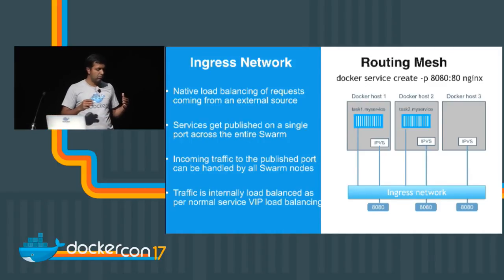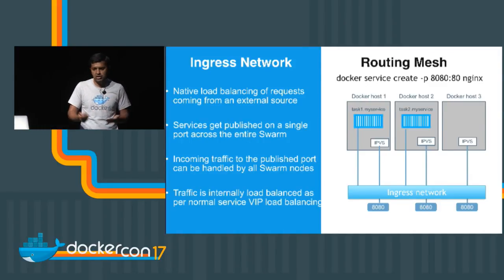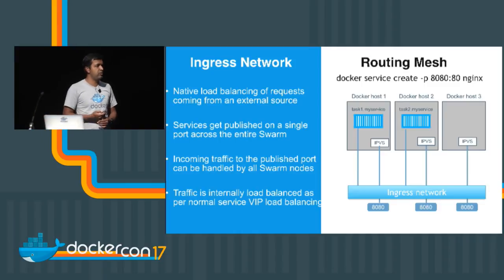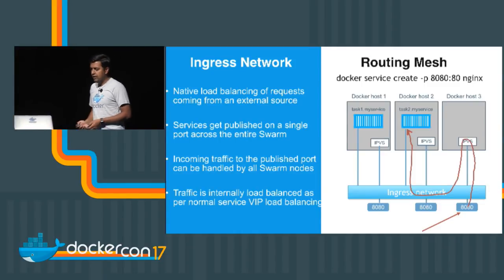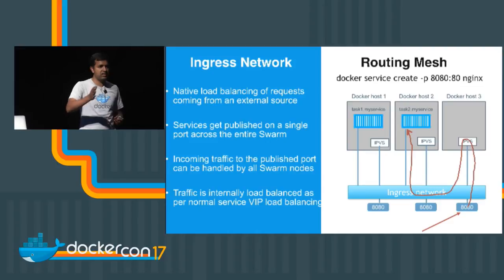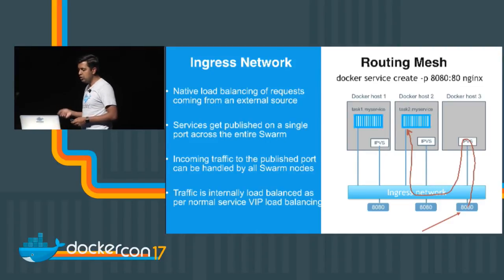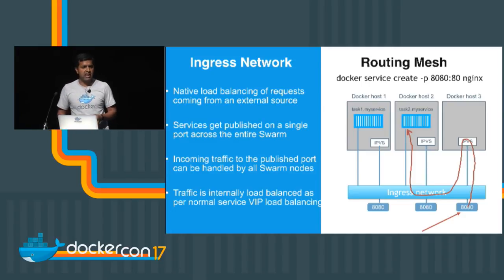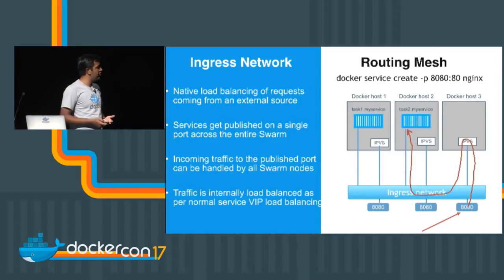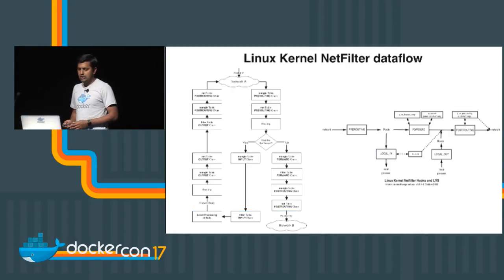There's one more interesting feature called routing mesh, which makes use of all the technologies explained so far. In routing mesh, it doesn't matter where the container belongs. When traffic has to come north-south from external to the cluster, routing mesh knows how to route the traffic to the appropriate container wherever it is, even if the container doesn't belong to the particular host where traffic arrives. This is done using IPvS — the same technology as before. Traffic is load-balanced using normal service load balancing — exactly the same mechanism.